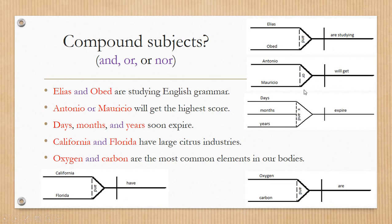Then what is it going to happen if we have more than two subjects? We are going to add lines. We have here this example: Days, months, and years soon expire. So we have three. Since we have three, we're going to have three lines. Days, months, and years.